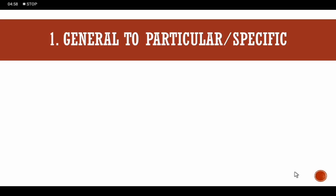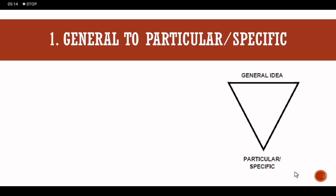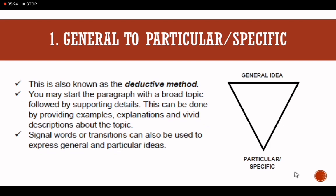Let's talk about the general-to-particular pattern. 'Particular' means specific. We can see this illustrated as an inverted triangle — on top is the general idea, and at the bottom are the particular or specific ideas. The general-to-particular pattern is also known as the deductive method. We may start our paragraph with a broad topic followed by supporting details, and we can provide examples, explanations, and descriptions about the topic.